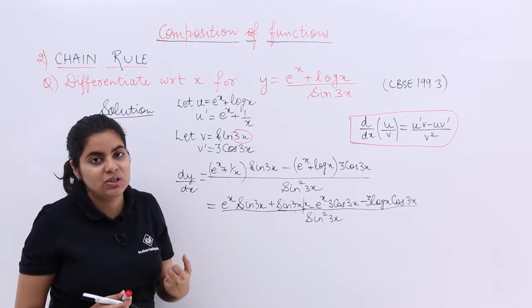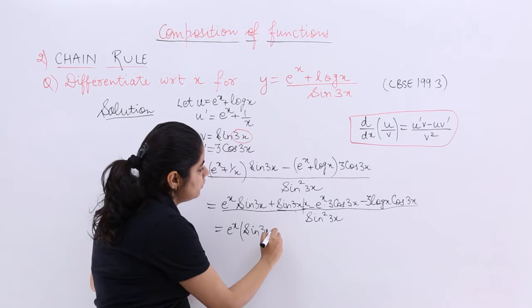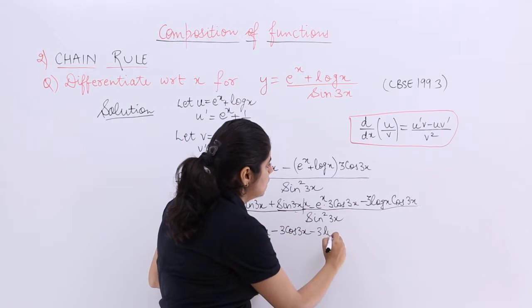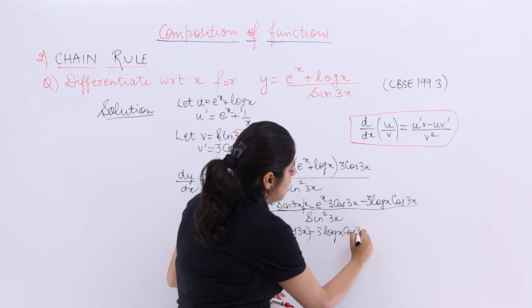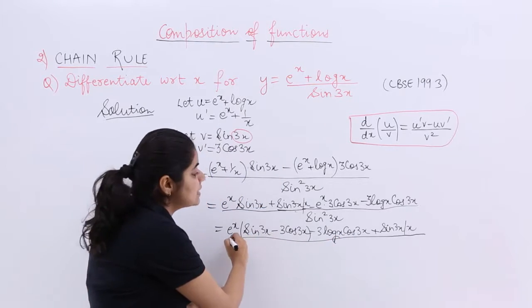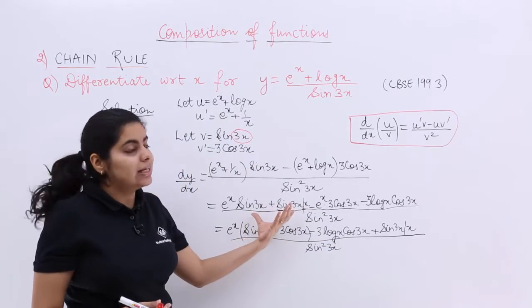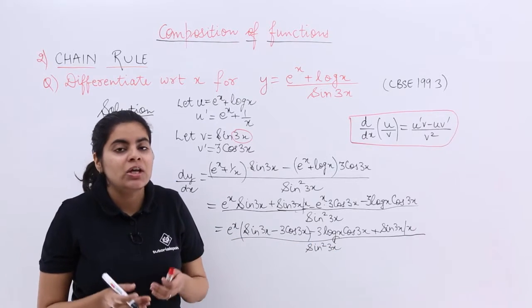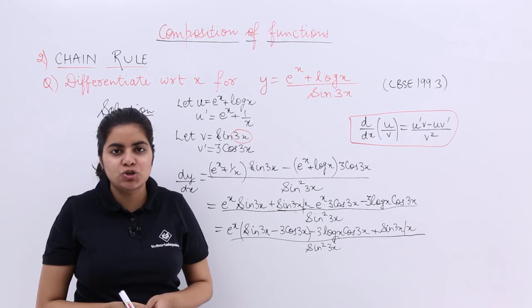Taking e^x as common, the final answer is: dy/dx = [e^x (sin 3x − 3 cos 3x) − 3 log x cos 3x + sin 3x / x] upon sin squared 3x. Since this is simplification, everyone may have their own approach — some may take e^x common, others may take sin 3x common — both are fine. The answer should be expressed in the simplest possible form. That was question number 2 based on the chain rule. Stay tuned for the next video, which covers chain rule question number 3.